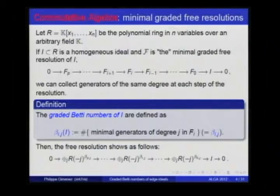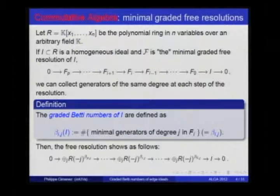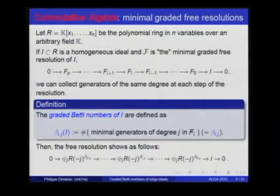R will be a polynomial ring in n variables over an arbitrary field. If we have a homogeneous ideal in R, we consider the minimal graded free resolution of I. We call the graded Betti numbers of I the number of minimal generators of degree j at the i-th step of the resolution. The minimal free resolution looks like this, as Claudia showed in her talk this morning. We collect at each step the degrees and count how many we have in each degree.